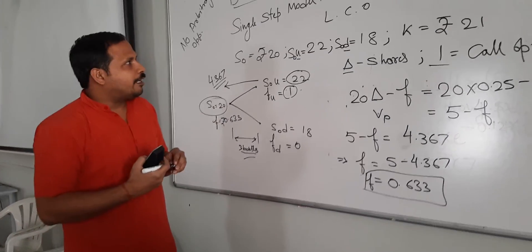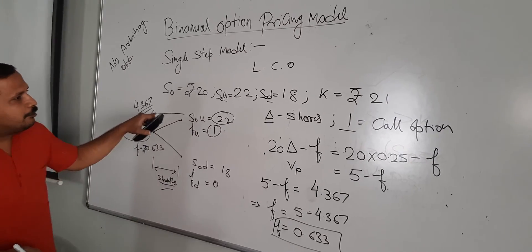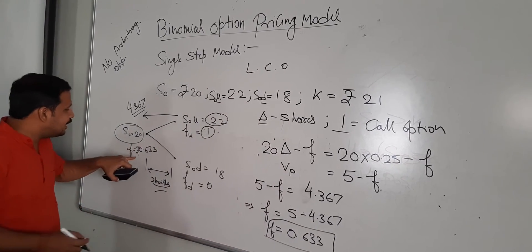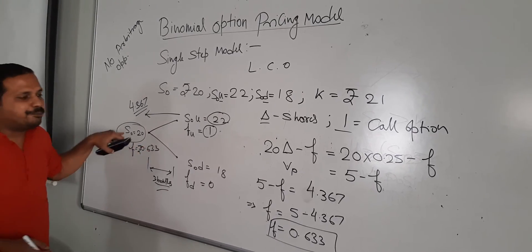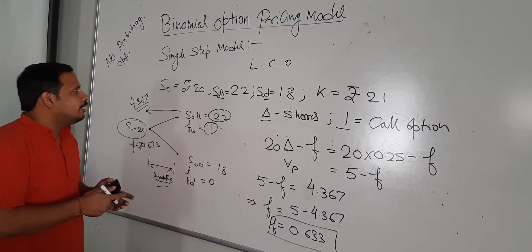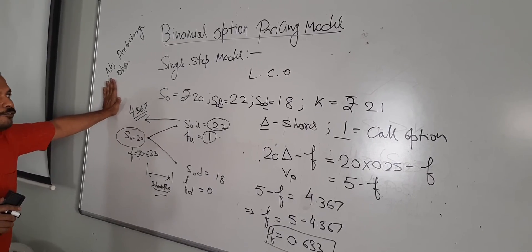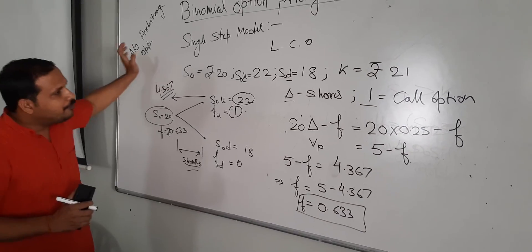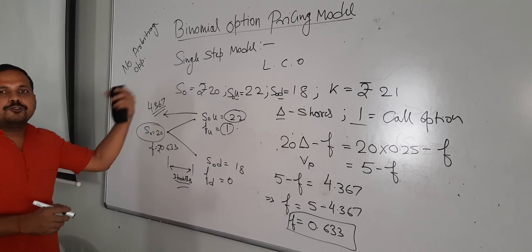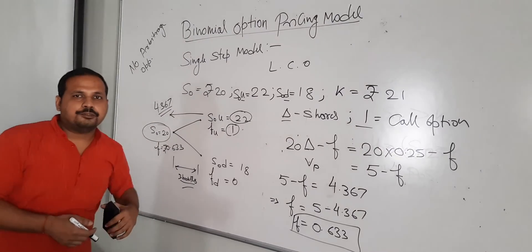Today we have calculated the value of the option using the binomial option pricing model. We calculated the hedge ratio delta, and the value of the option came to 0.633 per share. The only assumption is that it is a risk-free portfolio with no arbitrage opportunity available for investors. We will use the same process to derive the formula used for option pricing using the binomial model in the next session.